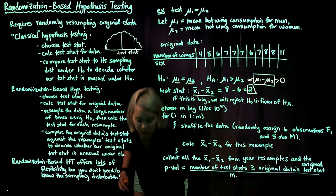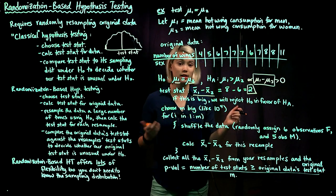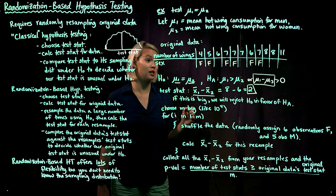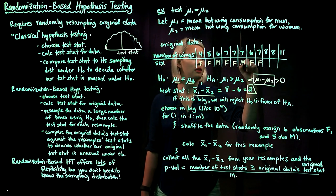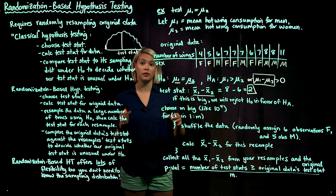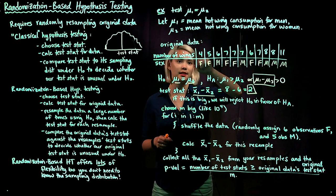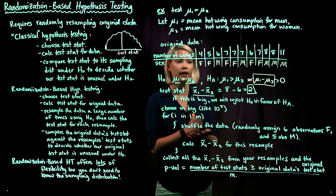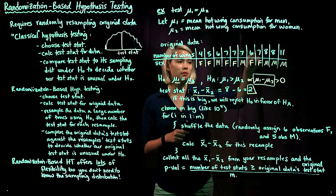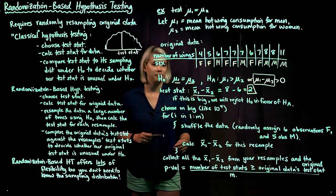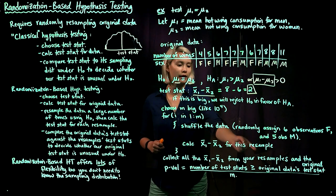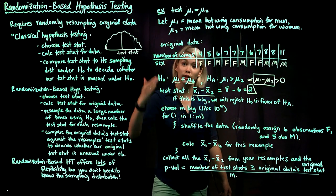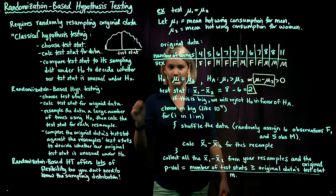Using a random number generator, we select 6 of the original data points to be female and the remaining 5 to be male. This is one resample — we've randomly assigned 6 data points to women and 5 to men. Then we calculate x̄₁ − x̄₂ for this resample. We do this a whole bunch of times: resample the data, calculate the test statistic, erase all assignments, and repeat — over and over until we have a large collection of test statistics.